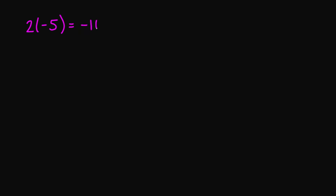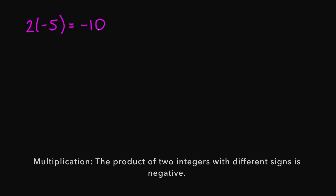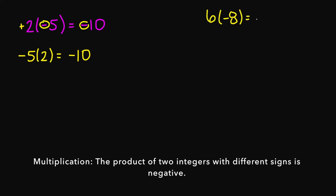So looking at the same example, we said 2 times negative 5, this is going to give us negative 10. So the product of two integers with different signs — your answer is going to be negative. My 2 is a positive 2, and then you have a negative 5. That means you're going to get a negative answer. So negative 5 times 2 is also going to be negative 10. And 6 times negative 8 is negative 48.